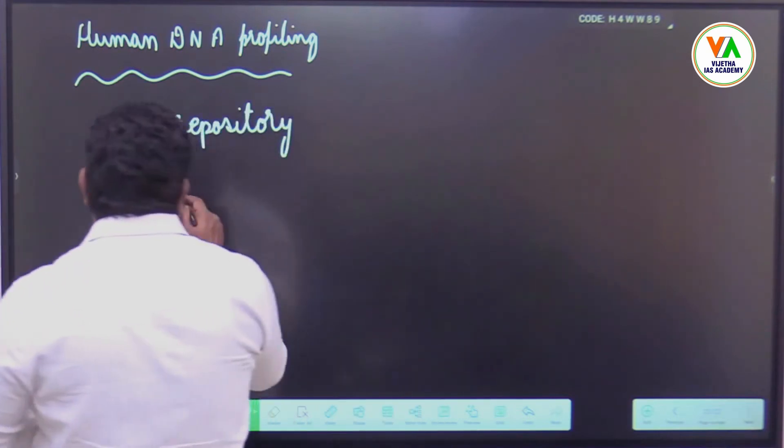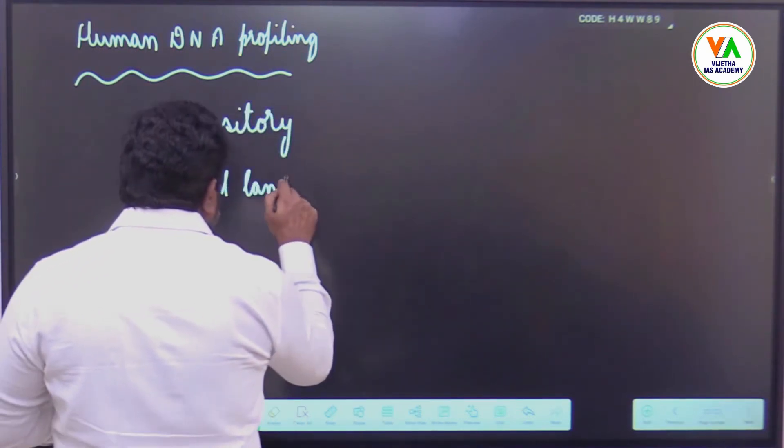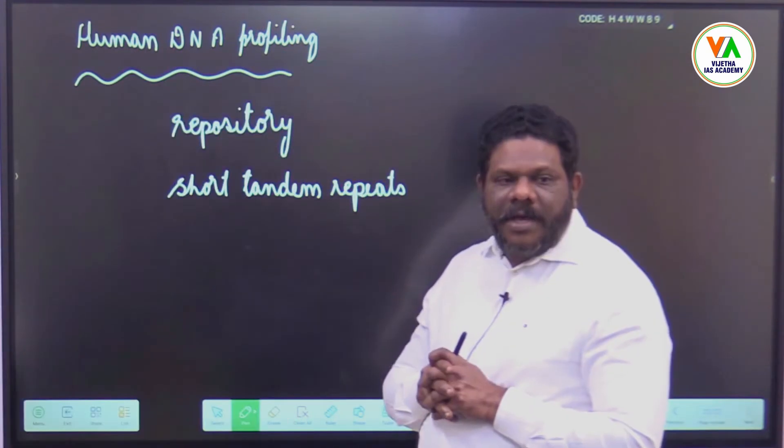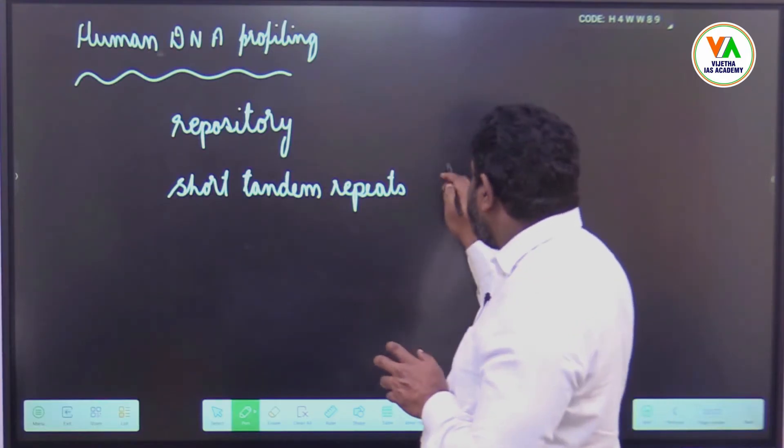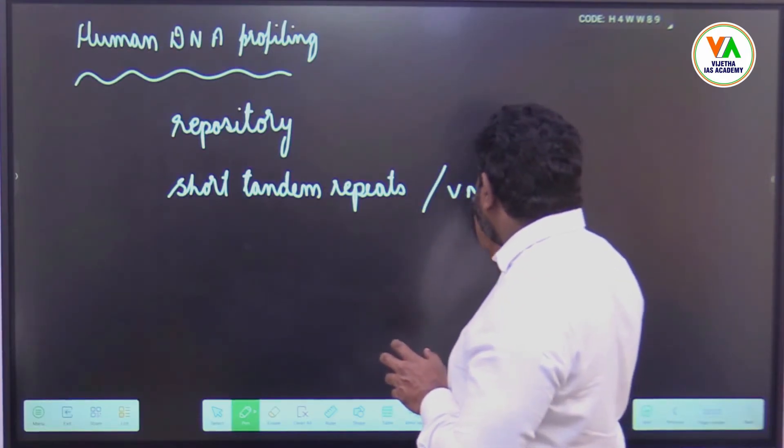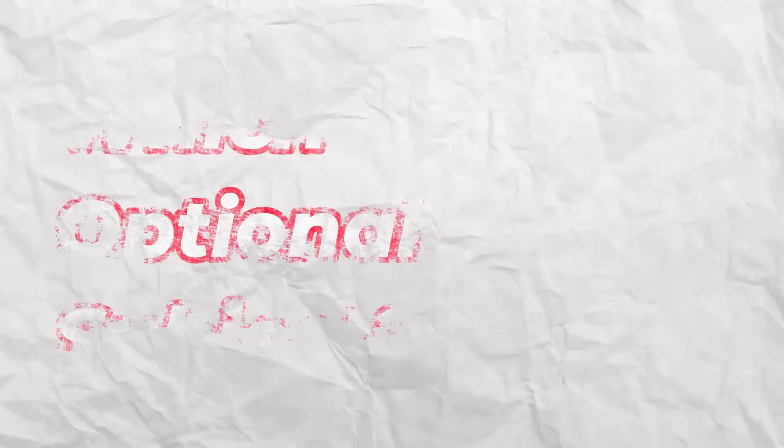These are referred to as short tandem repeats. They are sometimes referred to as variable number tandem repeats.